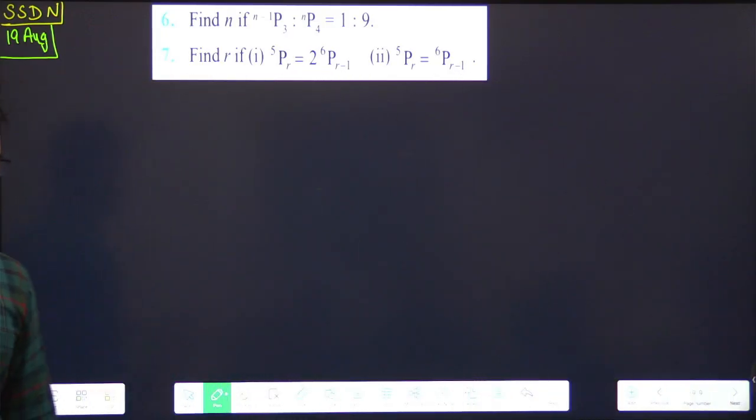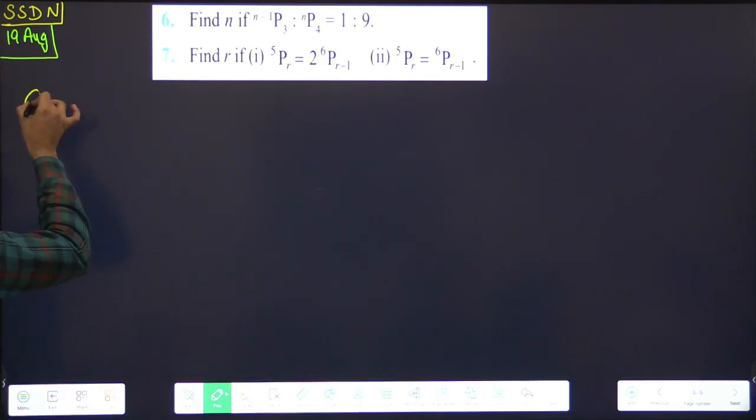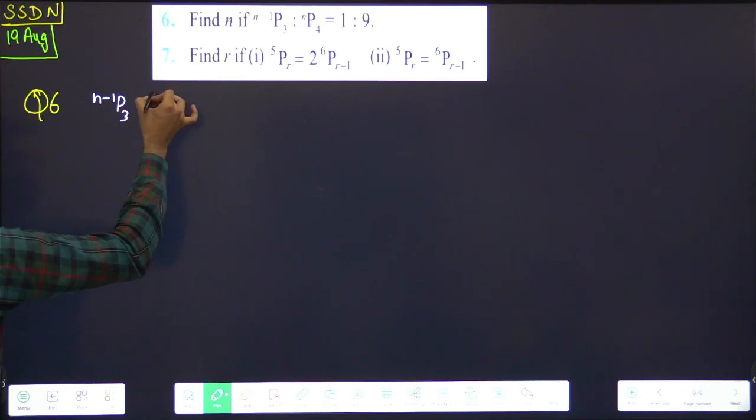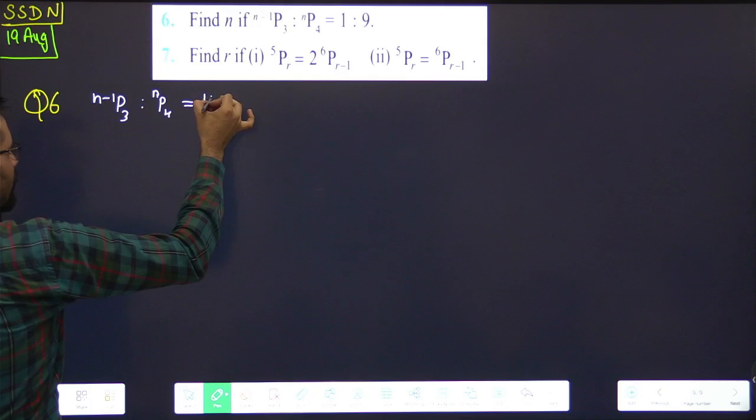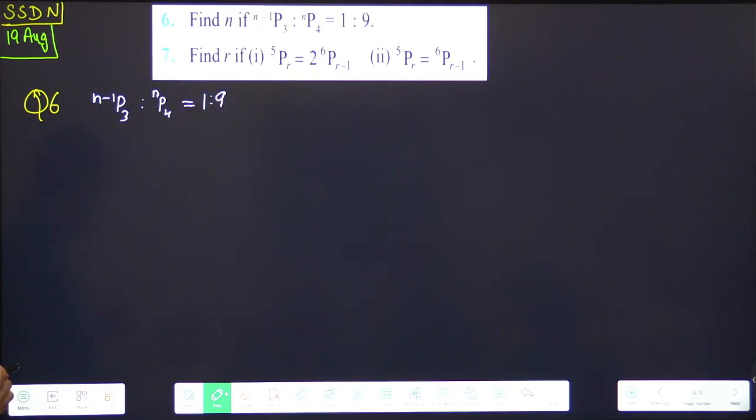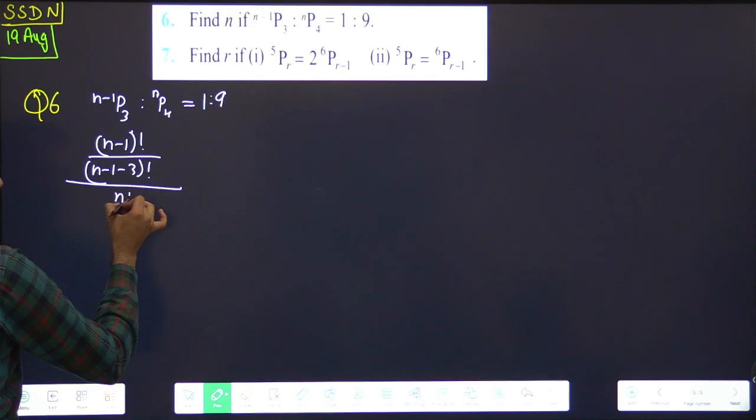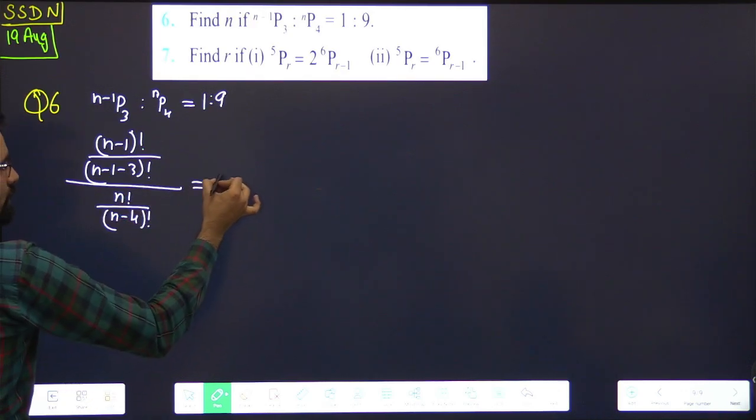Let's move on. Question number 6, will you attempt or should I do it? Let's all attempt right now. Question 6. Let's see question number 6. What are we doing? Find n. n has to be found. And what is it? (n-1)P3 is to nP4. What is it equal to? 1 is to 9. Have to find n. How will I find it? Tell me. What does ratio mean? Divide. Apply formula.